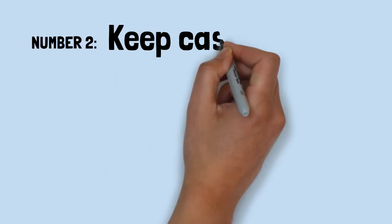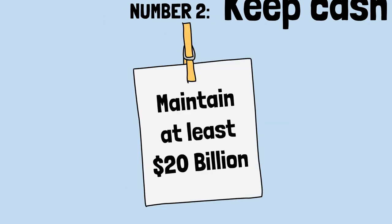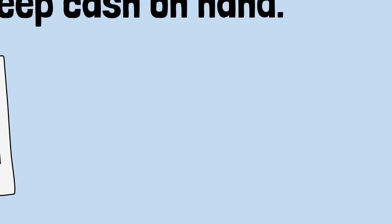Number two. Keep cash on hand. We always maintain at least $20 billion, and usually far more, in cash equivalents, said Buffett about his business, Berkshire Hathaway.